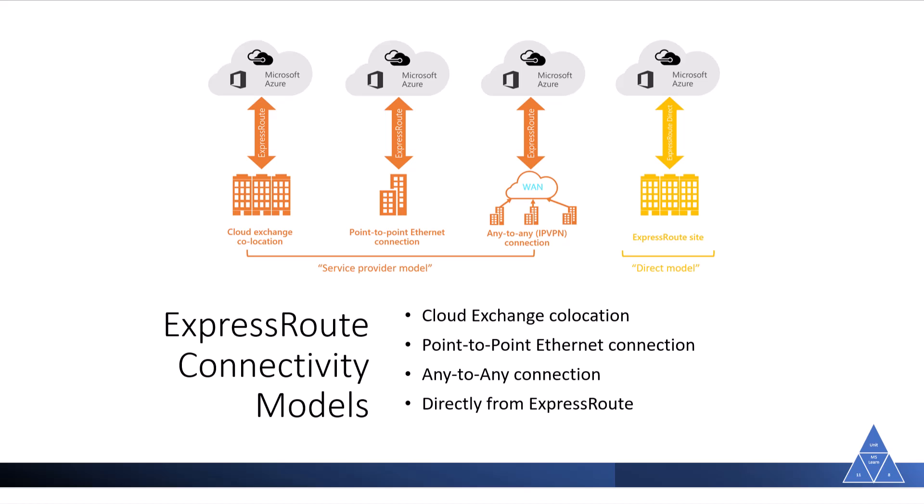Point-to-point ethernet connection refers to using a point-to-point connection to connect your facility to Microsoft cloud. Any-to-any: you can integrate your wide area network (WAN) with Azure by connecting your offices and data centers with any-to-any connectivity. Azure integrates with your WAN connection to provide a connection like you would have between your data center and any branch office. ExpressRoute directly lets you connect directly to Microsoft's global network at a peering location strategically distributed worldwide, providing dual 100 Gbps or 10 Gbps connectivity, which supports active-active connectivity at scale.